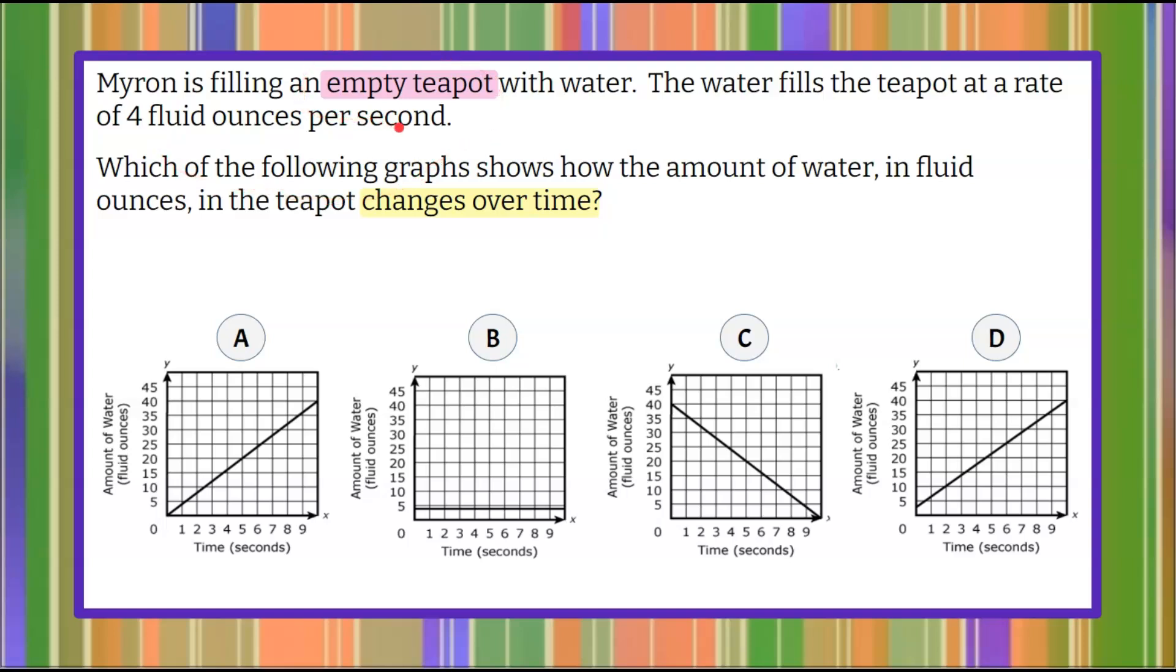I want to focus on the fact that the teapot is empty as it starts. We can see that we are comparing time, the amount of time that the water is going in the teapot, to the total amount of water in the teapot after a specific amount of time. We know that when we start at zero seconds, there is zero fluid ounces of water in the teapot. So the initial amount is (0, 0).